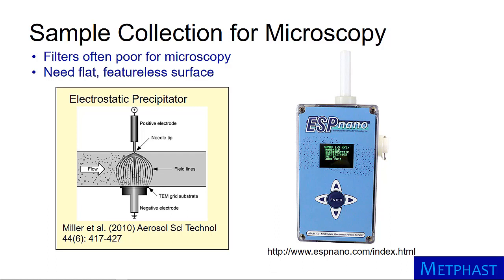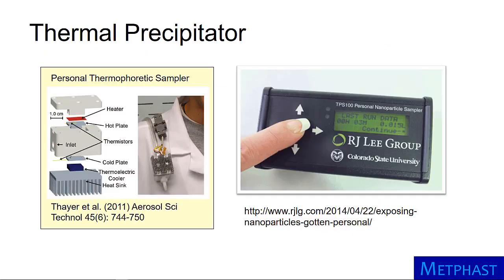The ESPNano is a specific instrument available for this purpose. In this device, particles in an incoming airstream are electrically charged and then attracted to and deposit on an oppositely charged substrate suitable for electron microscopy. An alternative way to collect particles is to use a thermal precipitator.